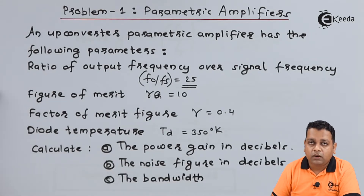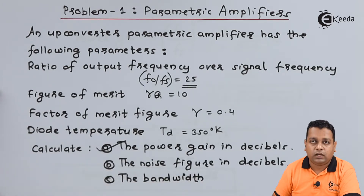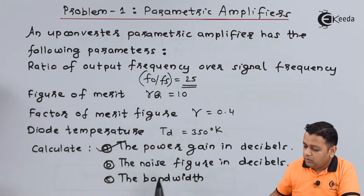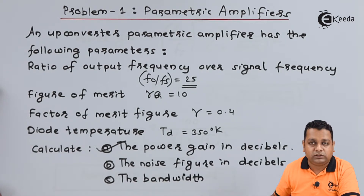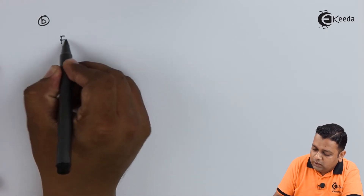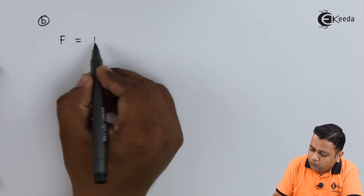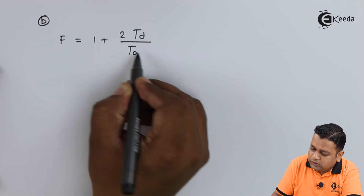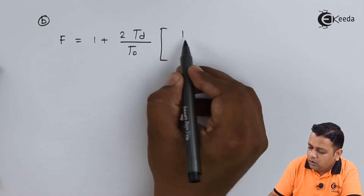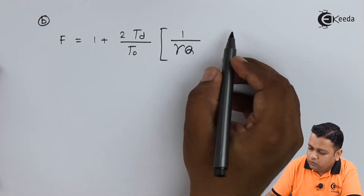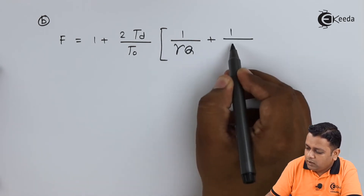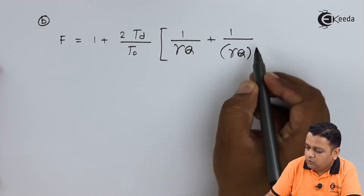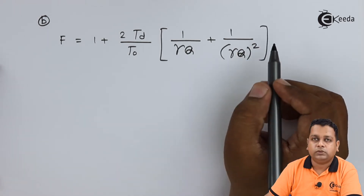Getting back to the problem statement — out of the three portions we are now covered with part A. Now we require to calculate the noise figure in decibels. For part B, the noise figure is represented as capital F, given as: F = 1 + 2·(T_D / T₀) · [1/(γQ) + 1/(γQ)²]. This is the formula.